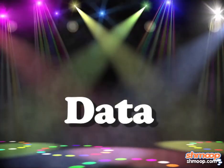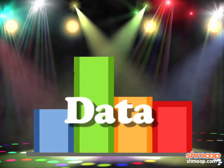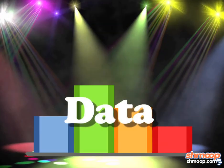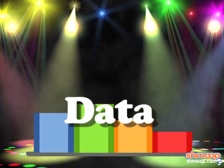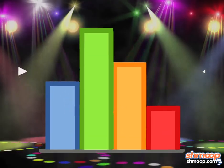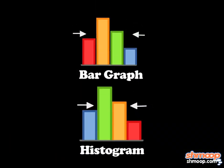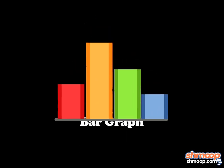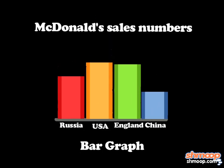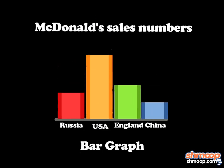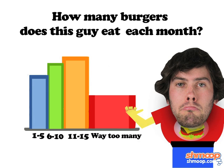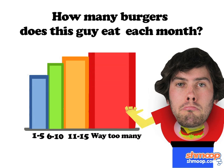But none of them showcase data as well as one of these bad boys. A histogram is kind of like a bar graph without the space in between the columns. The main difference is that the bar graph works to better chart individual data, while histograms do the job if you're charting a range of info.